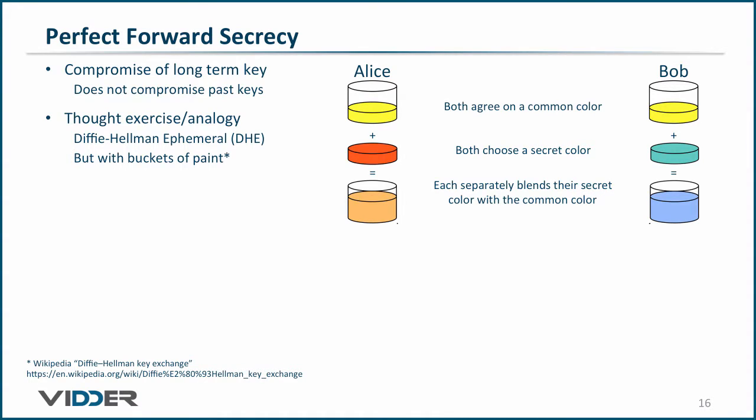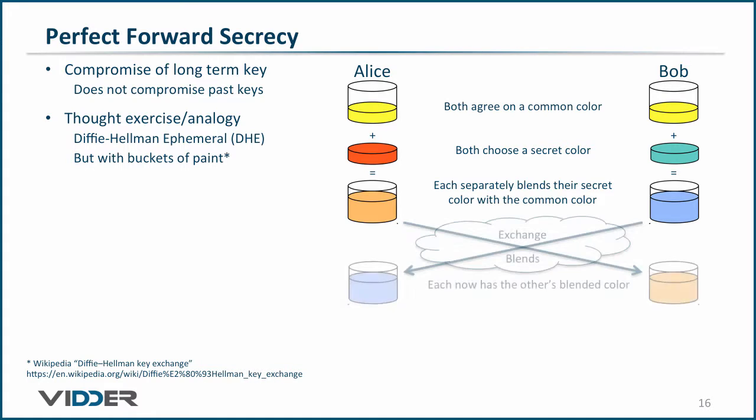They each independently mix their secret color with the common color. Then, exchange blends over the untrusted network. Note that an observer can see the light brown and light blue blends, but there is no efficient algorithm for the observer to deduce the exact secret colors.